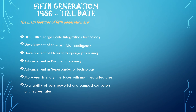This generation is based on Artificial Intelligence (AI) software, which is an emerging branch in computer science that interprets the means and methods of making computers think like humans. Advancement in parallel processing was also introduced. In AI, we have robotics, neural networks, game playing, and the development of expert systems to make decisions in real-life situations, as well as natural language understanding.